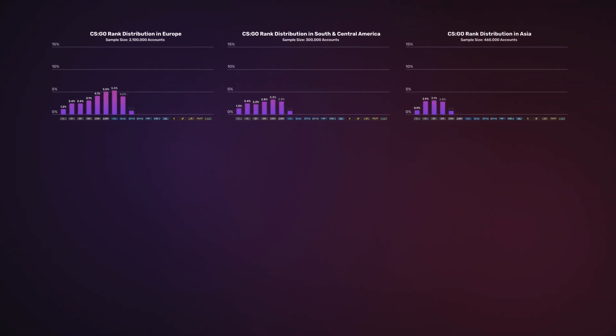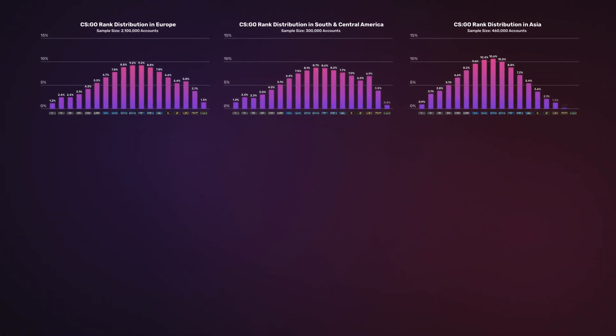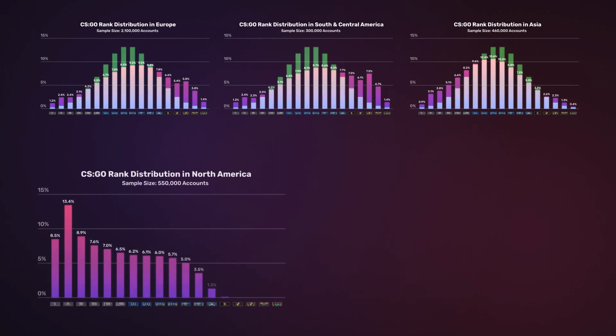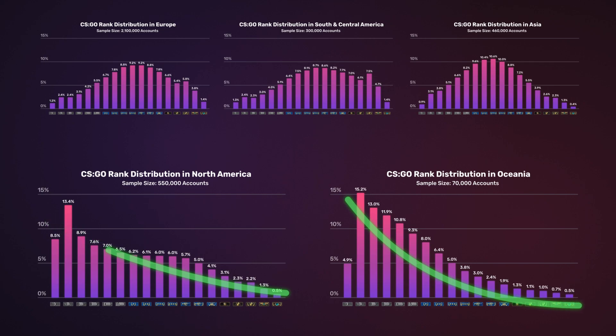Let me give you a peek at all the regions we'll analyze today. There are two distinct shapes: the rank distribution in Europe, South America, and Asia approximates what's called a normal distribution. But in North America and Oceania, the distribution shows a decreasing behavior.